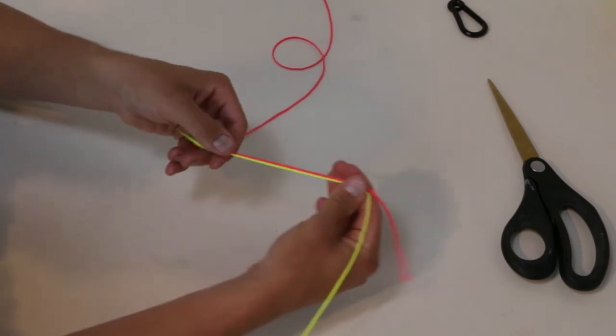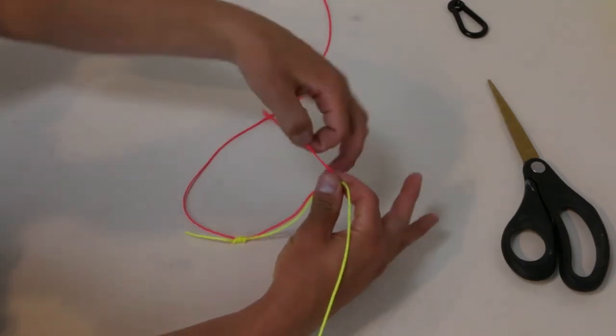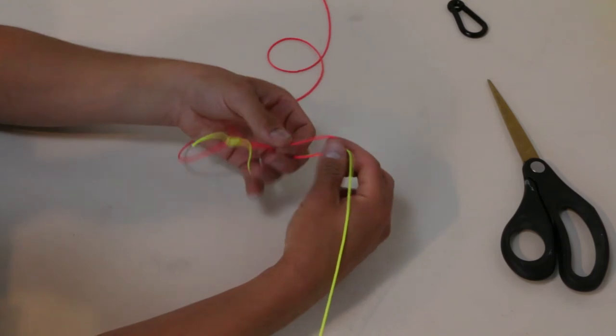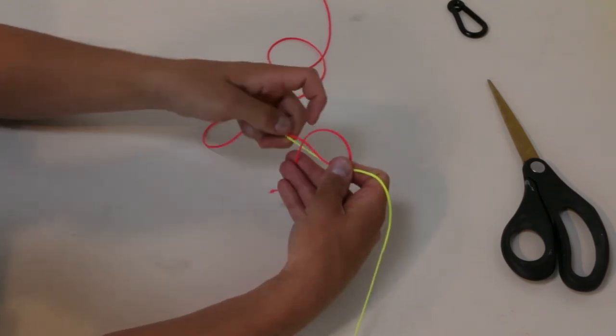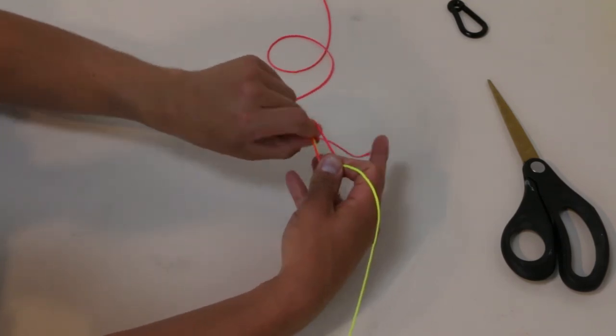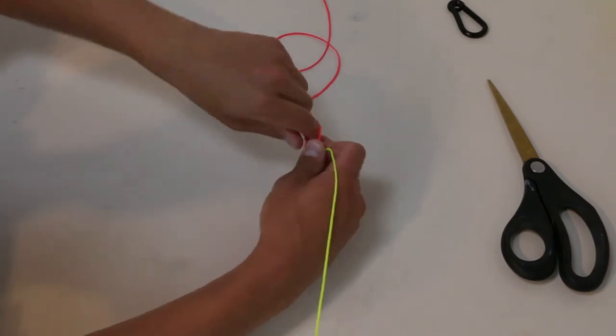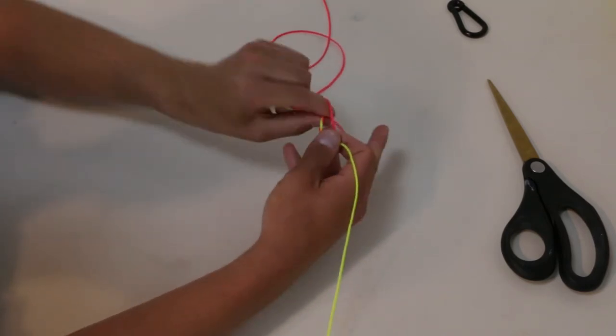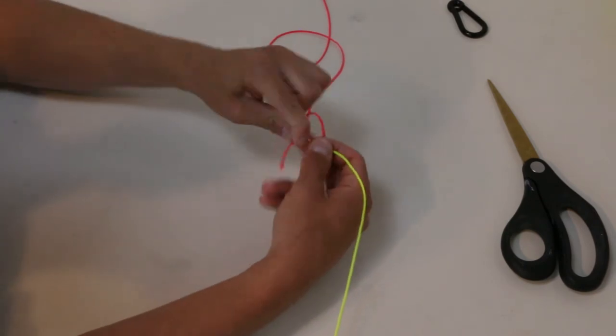Give ourselves a little room to work with on this other side. Same thing. Form your loop. Make sure you have plenty of tag end to work with. Pinch the intersection. One, two, three, four, five.